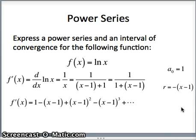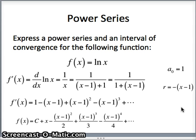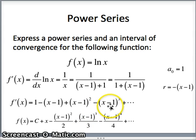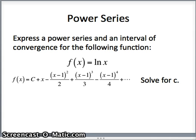We're going to integrate both sides. Integrating the left side gives me f of x. Integrating the right side gives me a function, and normally we put plus c at the end. I'm going to put plus c at the beginning to make it easier to evaluate. So: plus c, then integral of 1 is x, integral of x minus 1 is x minus 1 squared over 2, integral of x minus 1 squared is x minus 1 cubed over 3, integral of x minus 1 cubed is x minus 1 to the fourth over 4. We have a version of f of x that should approximate log x. But I've got to find c.